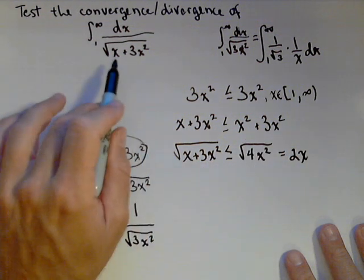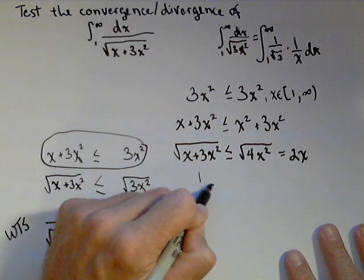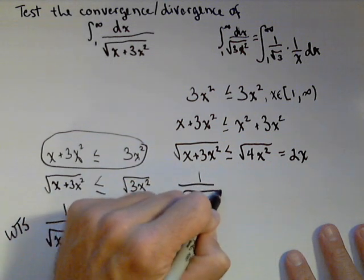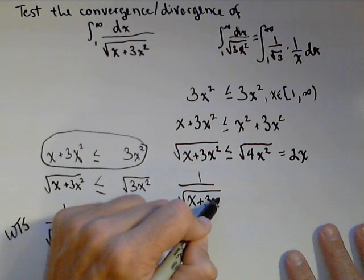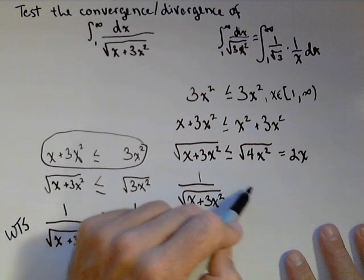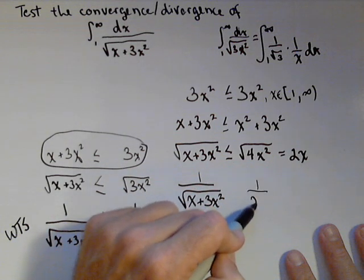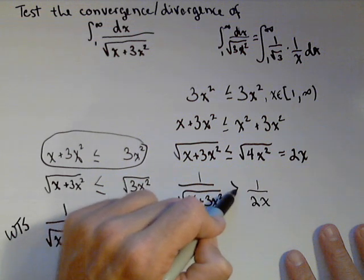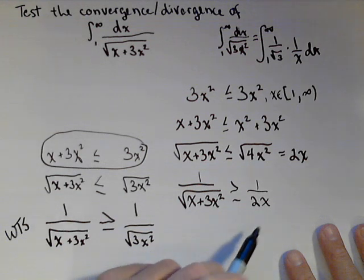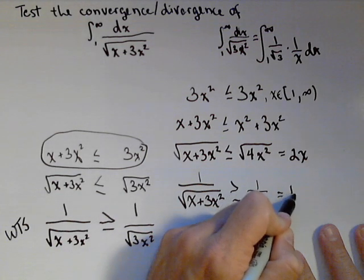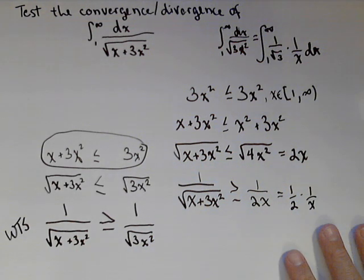So now I need to flip this so I can get back to my integrand. So I'm going to have one over the square root of x plus three x squared. And when I flip both sides of my ratio, I get to flip my inequality. Notice what this is. This is one half times something we know diverges.